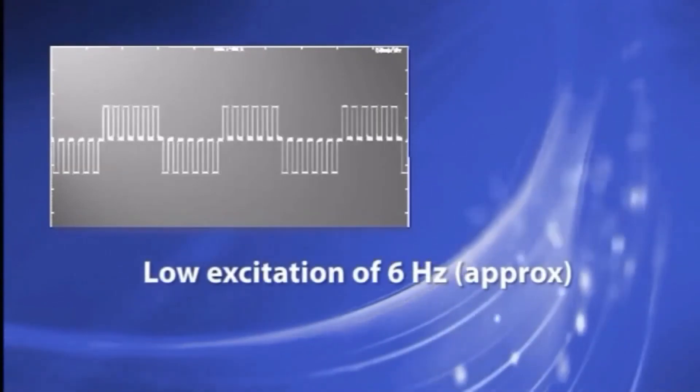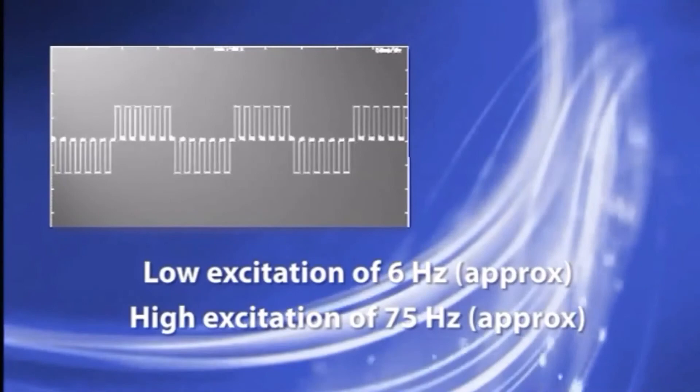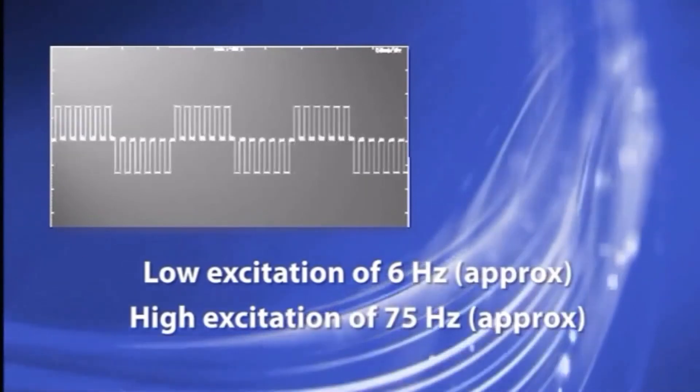The dual frequency waveform can be observed by putting an oscilloscope on the excitation terminals of the Yokogawa ADMAG magnetic flow meter. You can see the low excitation of approximately 6 hertz, the high excitation of 75 hertz, and the two signals superimposed on each other.